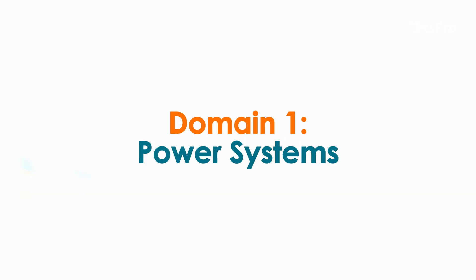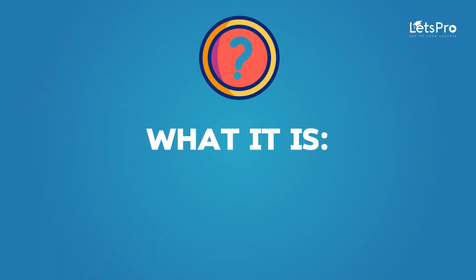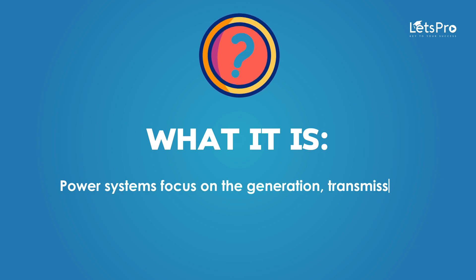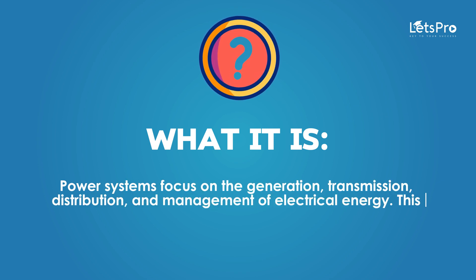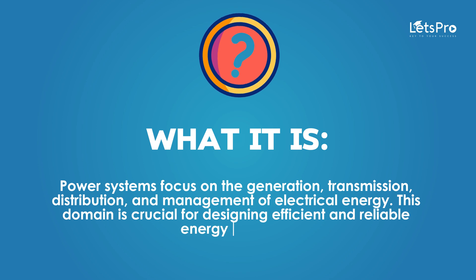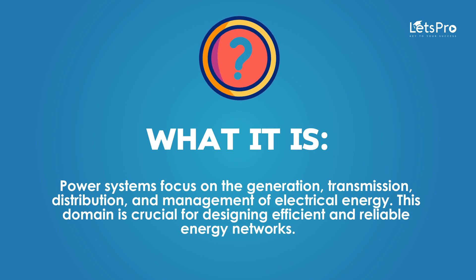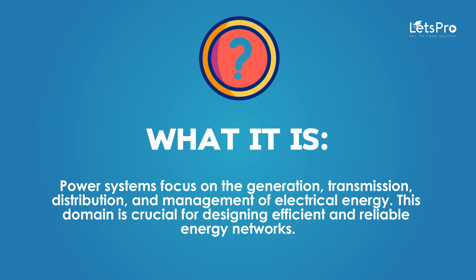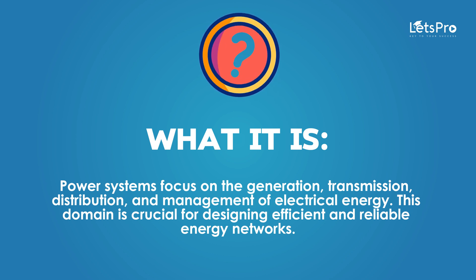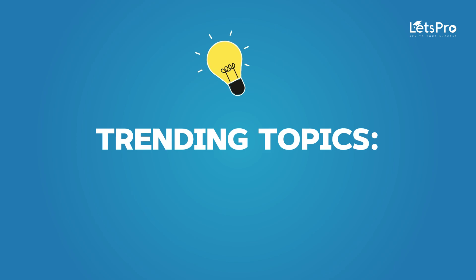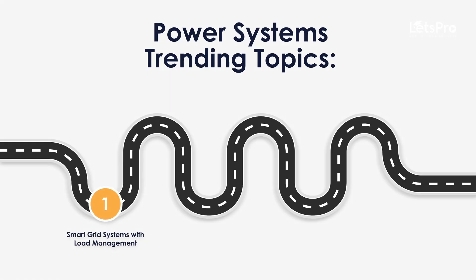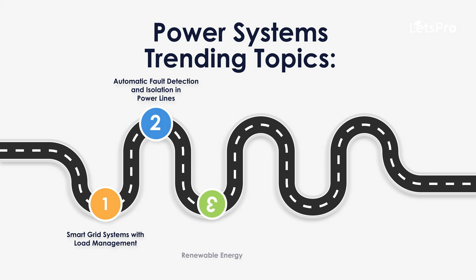Domain 1: Power Systems. Power systems focus on the generation, transmission, distribution and management of electrical energy. This domain is crucial for designing efficient and reliable energy networks. Trending Topics: Smart Grid System with Load Management, Automatic Fault Detection and Isolation in Power Lines, Renewable Energy Integration in Microgrids.